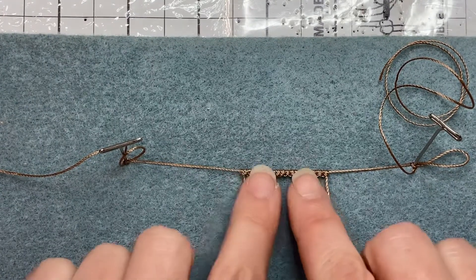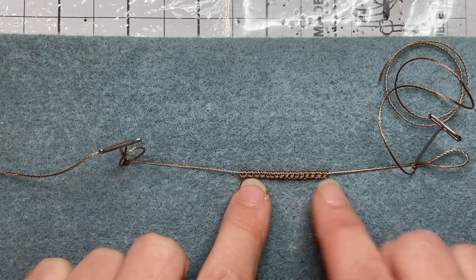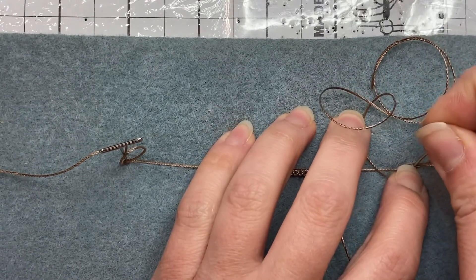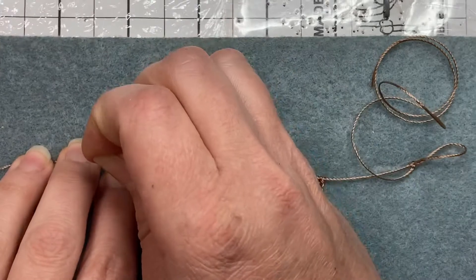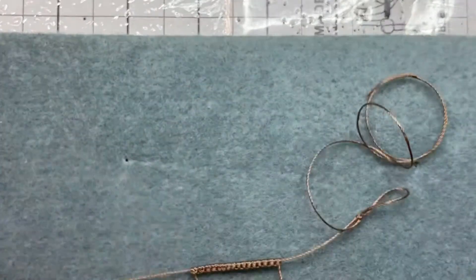Okay, so now I have 16 lark's head knots. So we're going to take the T-pins out of the holding cords and remove your slip knot.